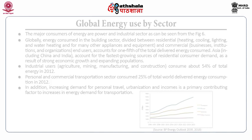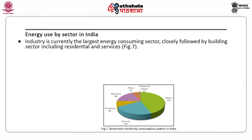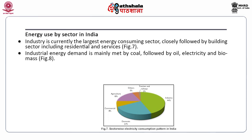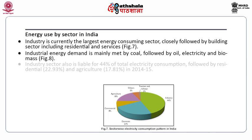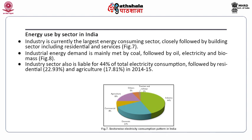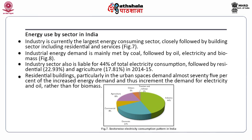The energy used by various sectors in India: Industry is currently the largest energy consuming sector, followed by the building sector including residential and services. The industrial energy demand is mainly met by coal, followed by oil, electricity and biomass. The industry sector is also liable for 44% of total electricity consumption, followed by residential and agriculture. Residential buildings, particularly in urban spaces, demand almost 75% of the increased energy demand, thus increasing demand for electricity and oil rather than biomass.